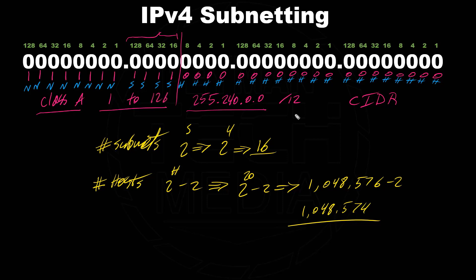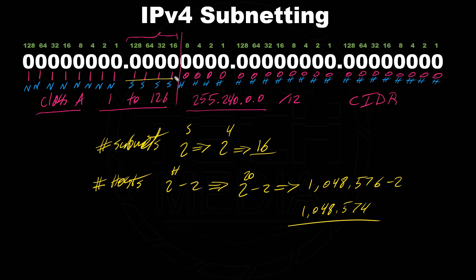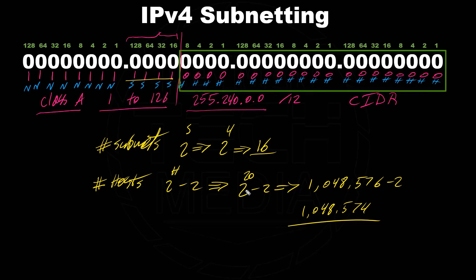So having a Class A IP address with a subnet mask of 255.240.0.0 gives us 16 subnets, and inside every subnet we can have 1,048,574 available IP addresses. Here we can see the differences between host bits, network bits, and subnet bits. The subnet bits are the bits borrowed from the host bits — in this case 4 bits — and 2 to the power of 4 gives 16 subnets. 2 to the power of 20 minus 2 gives the number of hosts.